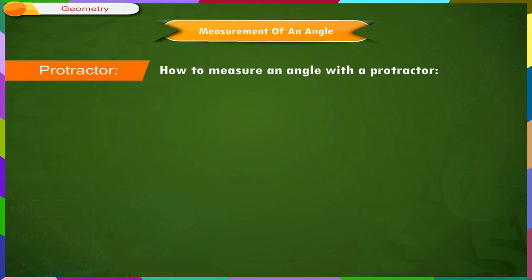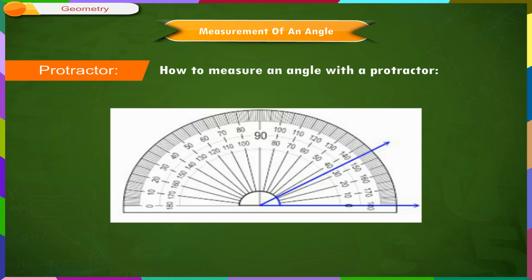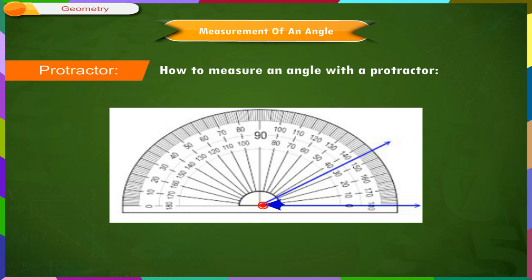How to measure an angle with a protractor? Place the central point of the protractor on the vertex of the angle. Line up one side of the angle with the baseline of the protractor where you see the number 0. Read the degrees where the other side crosses the number scale.